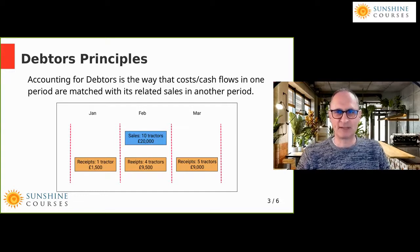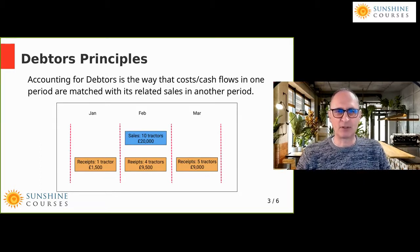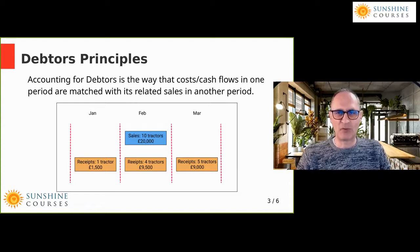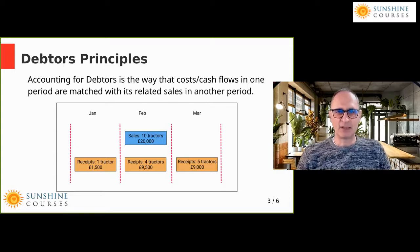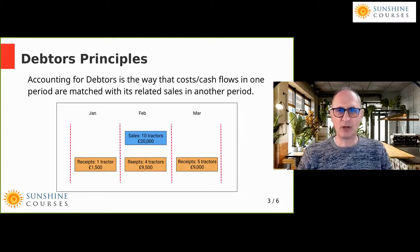The basic principle of debtors is the same as other balance sheet items — it's to do with matching. Debtors matches the cash flows with the related sales where the cash flows and the sales occur in different periods. The purpose of accounts is to keep track of assets and liabilities at the beginning of a period, account for profit or loss during the period, and account for assets or liabilities at the end.